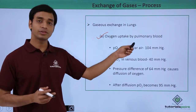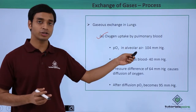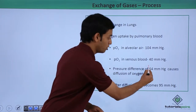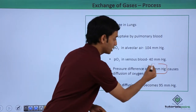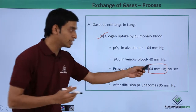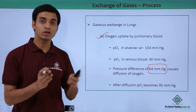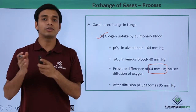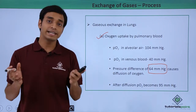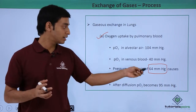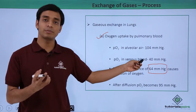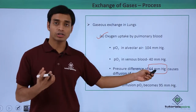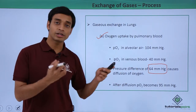The difference in partial pressure is about 64 mmHg. Because of this gradient and the process of simple diffusion, oxygen rushes into the blood.